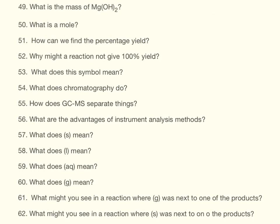We need to work out the mass of magnesium hydroxide. The mass of magnesium is 24, plus the mass of oxygen which is 16 and we have two of those, plus the mass of hydrogen which is 1 and we have two of those as well. So it's 24 + 16 + 16 + 2 = 58.